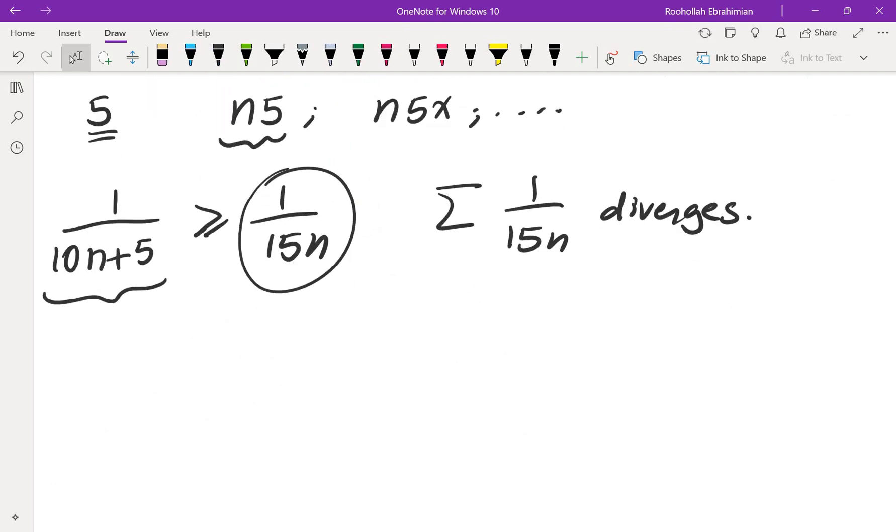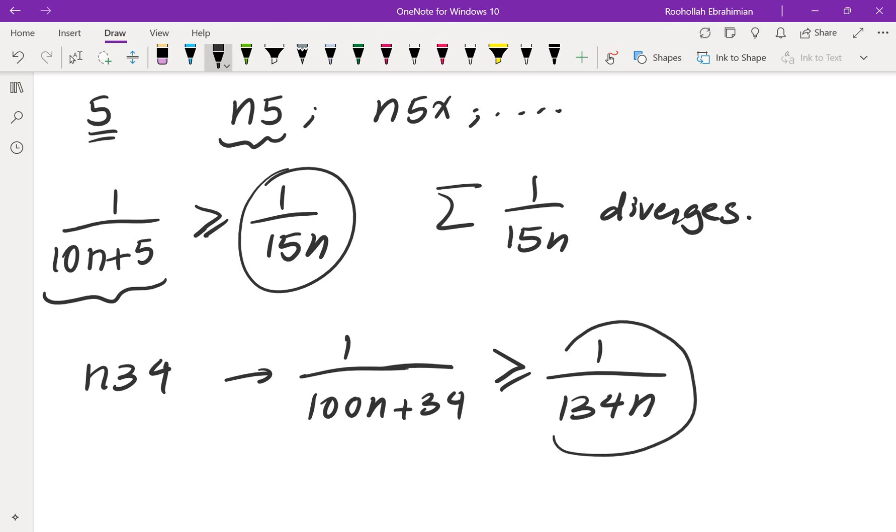Now what if I have two digits? I can look at maybe digits 3 and 4. That gives me 1 over (100n + 34), and this is greater than or equal to 1 over 134n, and again this diverges. The series of 1 over n when n consists of all the numbers where 34 appears somewhere in their decimal representation would also diverge.